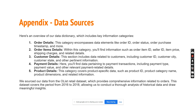Hi, I'm Vinay Patil. I'll introduce our data sources. Here's an overview of our data dictionary, which includes key information categories like order details, order item details, customer details, payment details, and product details. We sourced our data from the Olist retail dataset, which covers the period from 2016 to 2018, allowing us to conduct a thorough analysis of historical data.